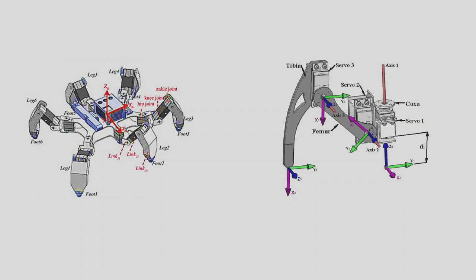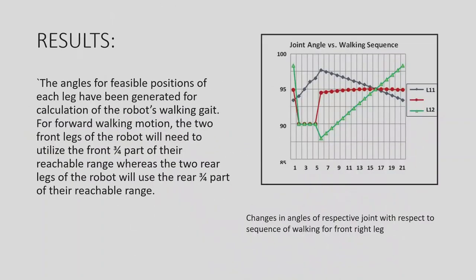These are the results from the leg motion on the board. The feasible positions of each leg have been generated for calculations of the robot's walking joint. For the forward walking motion, the two front legs of the robot will need to utilize the front three-quarters of the reachable range, whereas the two rear legs will use the rear three-quarters of the reachable range. You can see the graph of the legs.